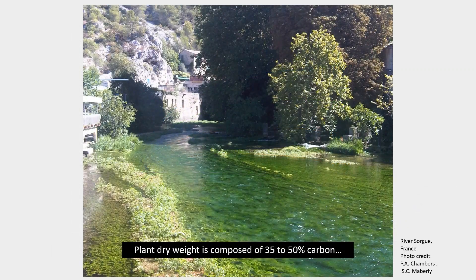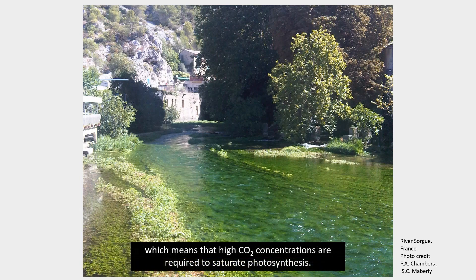Plant dry weight is composed of 35 to 50% carbon, but carbon supply can be restricted by low rates of diffusion, which means that high carbon dioxide concentrations are required to saturate photosynthesis.